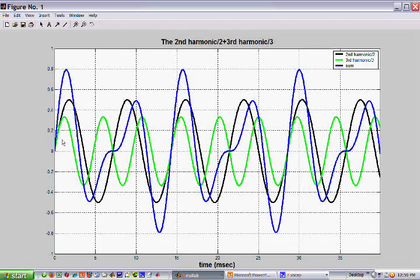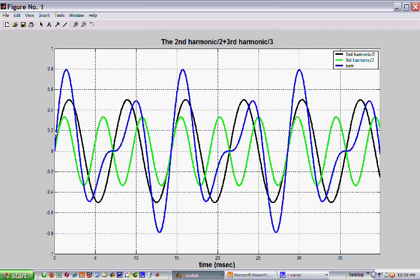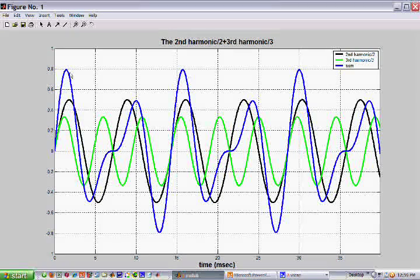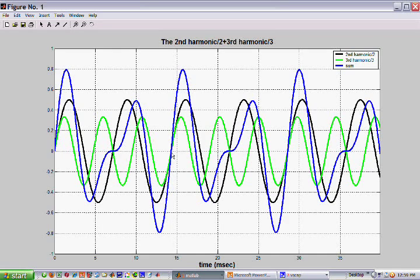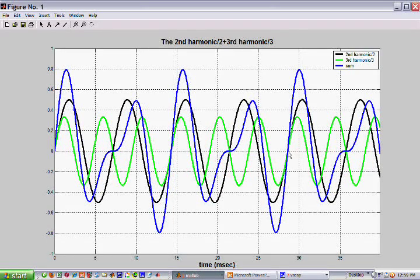Okay, now what do we have going here? The black curve shows the 2nd harmonic divided by 2. The green curve shows the 3rd harmonic divided by 3, and the blue curve shows the sum. And you can see that this blue curve starts to repeat itself at 14.3 milliseconds, which turns out to be the period of the fundamental. And again over here, about 28 milliseconds, it repeats itself again. So by adding those 2 harmonics together,